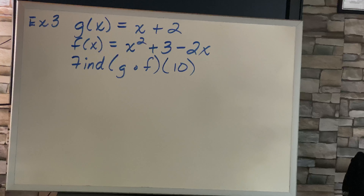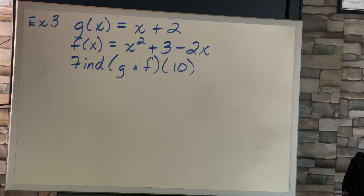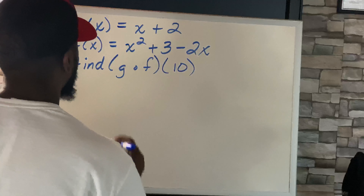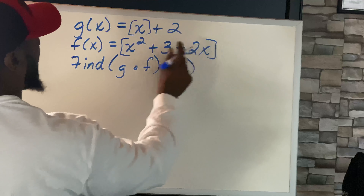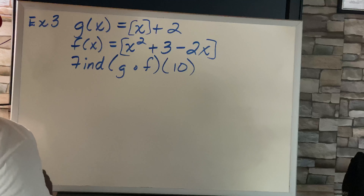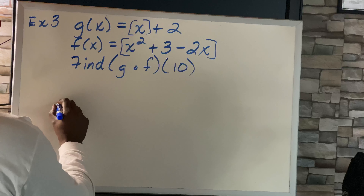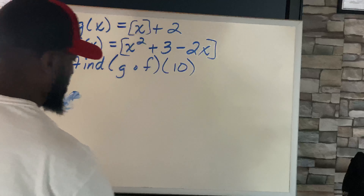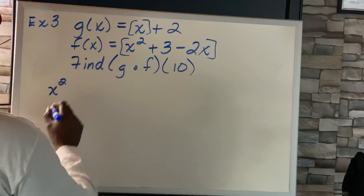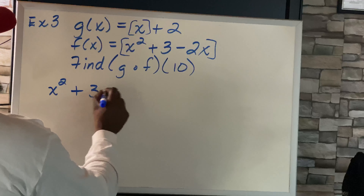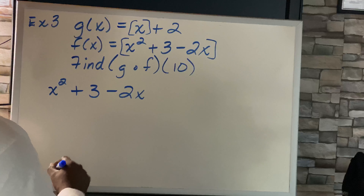Example 3: g of x equals x plus 2, f of x equals x squared plus 3 minus 2x. Find g of f of 10. Our base expression is x plus 2, and f of x goes right inside. So we get x squared plus 3 minus 2x, plus 2.